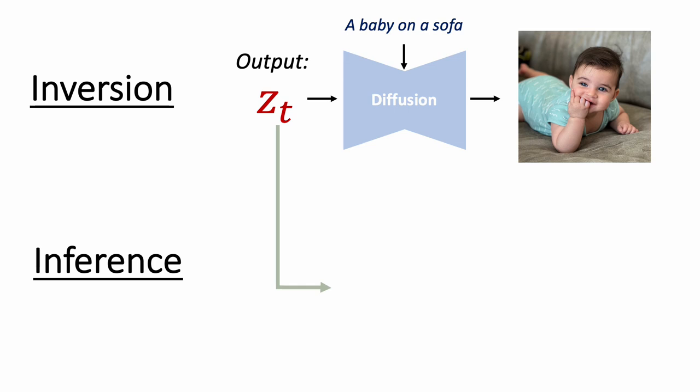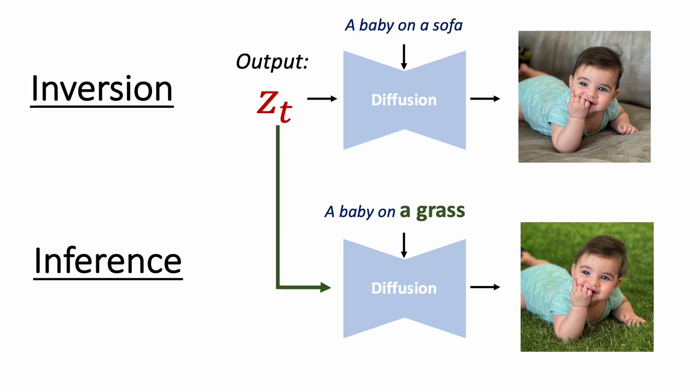Then at inference, we feed this noise vector when using prompt-to-prompt, resulting in meaningful editing while preserving the appearance of the original image faithfully.